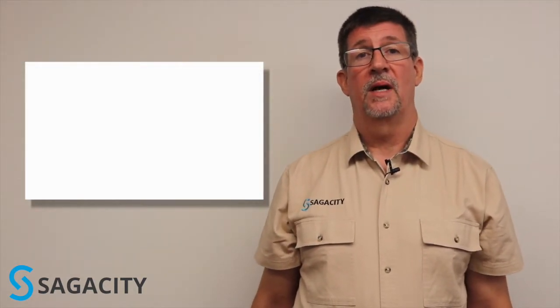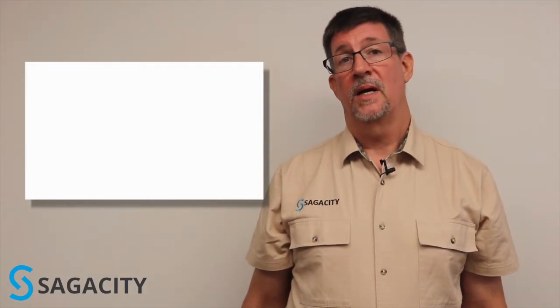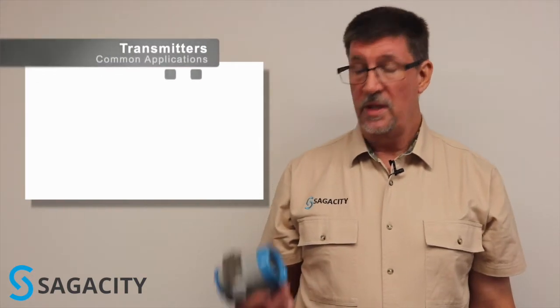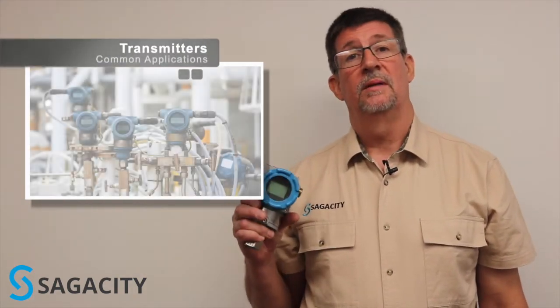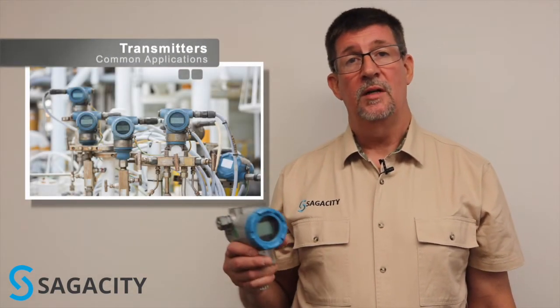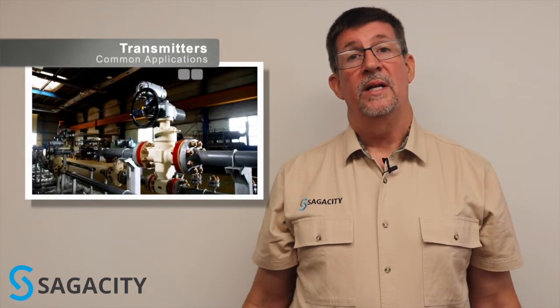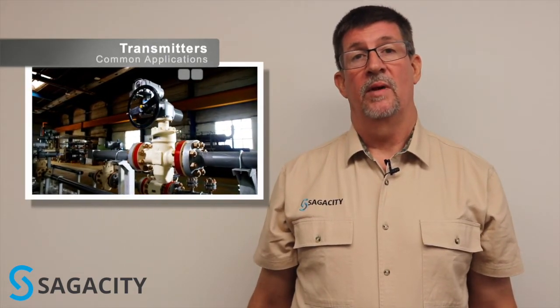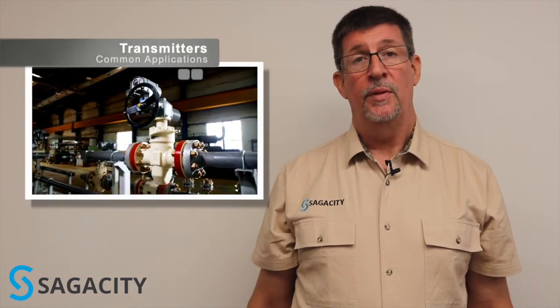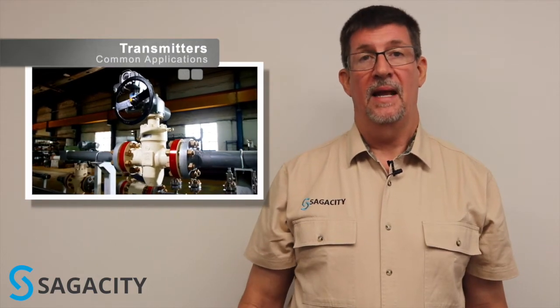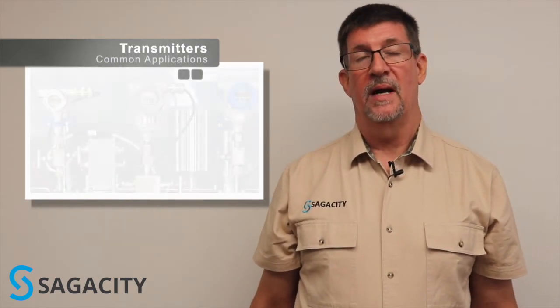Where you may have variables in the process in the future, maybe the process conditions change, you want to use a transmitter. A transmitter has a variable, adjustable range for the output. So you may have a 0–300 PSI range transmitter calibrated to that range, but the output is scalable to fit the range of interest for your application.